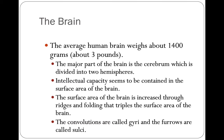The average human brain weighs about 1,400 grams — that's about three pounds. The major part of the brain is the cerebrum, which is divided into two hemispheres. Intellectual capacity seems to be contained in the surface area of the brain — only about an eighth of an inch into your brain is the thinking portion. The surface area of the brain is increased through ridges and folding that triples the surface area. The human brain kind of looks like a cauliflower, with lots of ridges and folds — convolutions and furrows — which are called gyri and sulci.